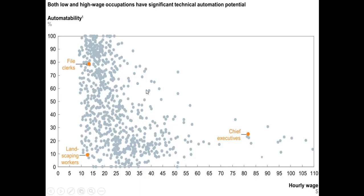Jumping back to the PowerPoint so you can see this chart — as you think about jobs which could be automated, you're probably going to be surprised. On the vertical axis is how much of it could be automated. On the horizontal axis is the hourly wage — all the way out here, people making $85-$100 an hour, and where the dot is tells you what job that is.